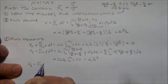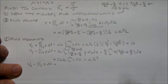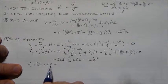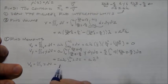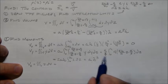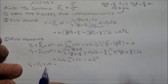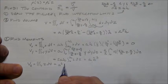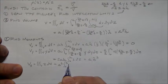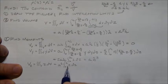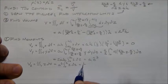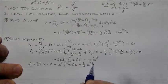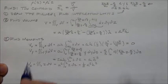Now the moment in the z direction. Both x and y integrals are unaffected by the z term, so we get a factor of a squared. Then we have the integral from 0 to h of z dz, which is one half h squared. So the z moment is one half a squared h squared.